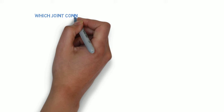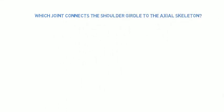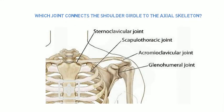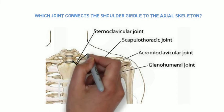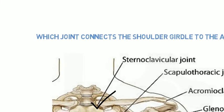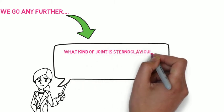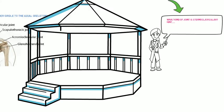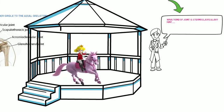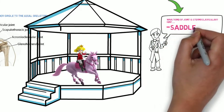So which one of the following do you think connects the shoulder girdle to the axial skeleton? Yes, it is the sternoclavicular joint, which is going to be the star of our presentation today. But before we move on, do you guys remember what kind of joint is the sternoclavicular joint? Here's a hint for you. Yes, it is a saddle joint.